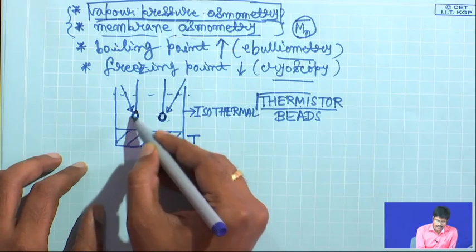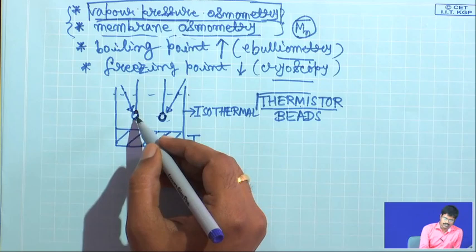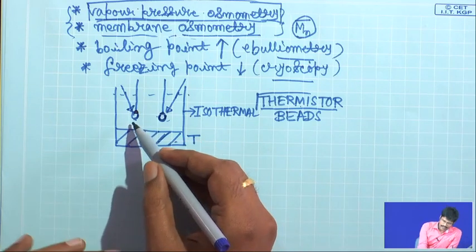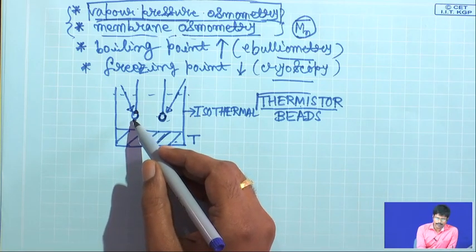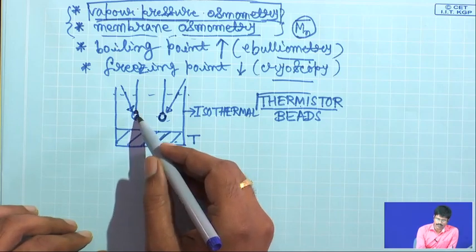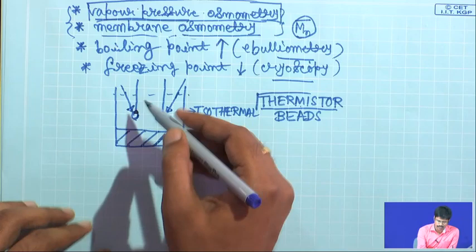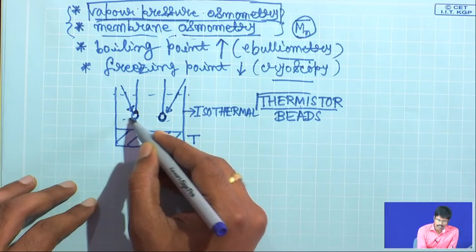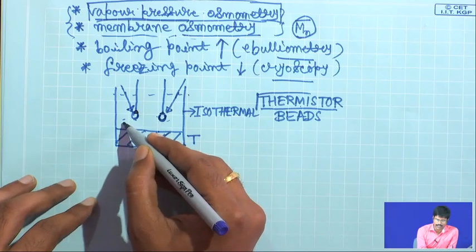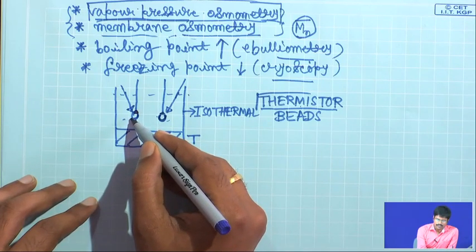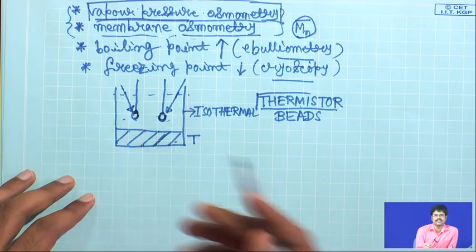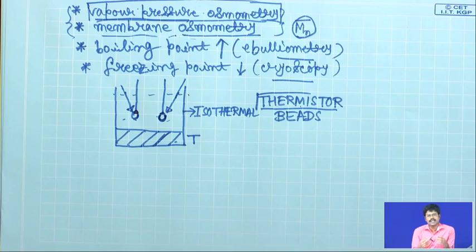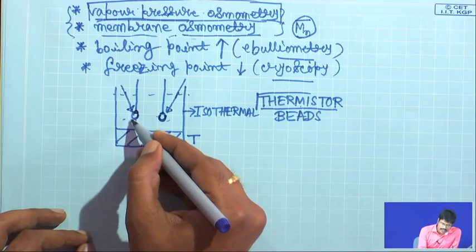But on the solution bead, you have a solute in the form of a polymer in that solvent. So the vapor pressure of the solvent is lowered and that is related to the mole fraction of the solvent. This lowering of vapor pressure means the situation will dictate that some of the solvent vapor condenses onto this drop. When the solvent vapor condenses on the drop, there is latent heat of vaporization released, and in the same process it will heat up this solution drop.